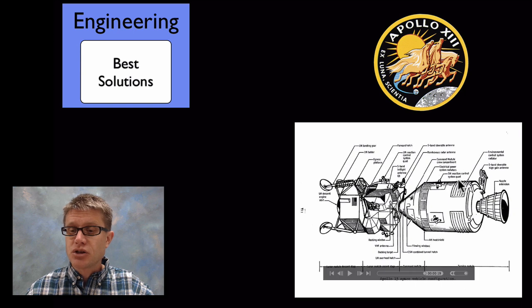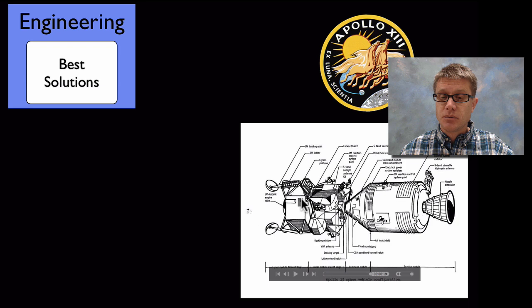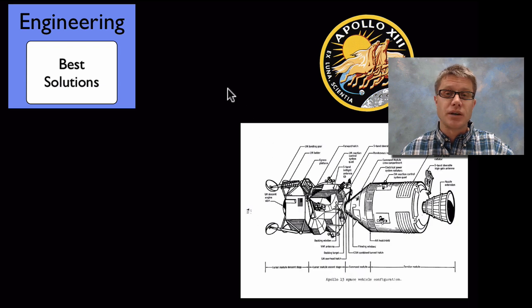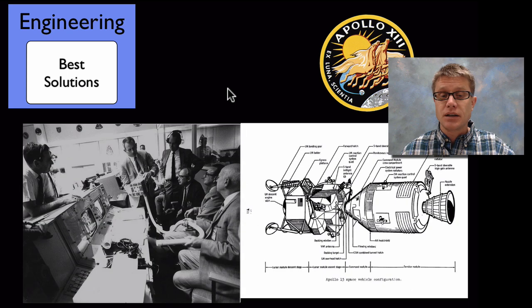What they had was an explosion of an oxygen tank on this service module and they had to eventually move over to this lunar module so they could survive. It presented engineers with all of these new problems that they hadn't really had to deal with before.